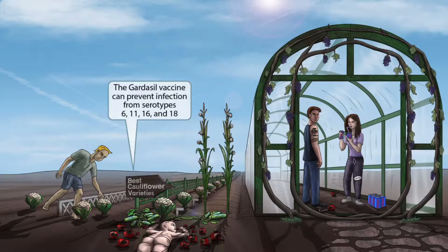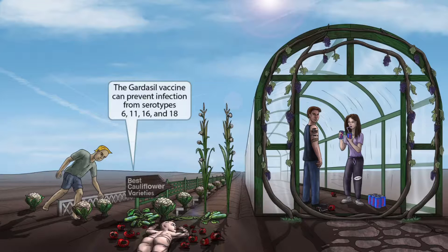The last addition to the image is a sign shaped like a syringe, which is our symbol for a vaccine. It says 'Best Cauliflower Varieties' and points toward the last four rows, meaning the vaccine is specific to serotypes 6, 11, 16, and 18. The vaccine is known as Gardasil, which should be easy to remember since this is taking place in a garden, which sounds like Gardasil. So the Gardasil vaccine can prevent infection from serotypes 6, 11, 16, and 18.